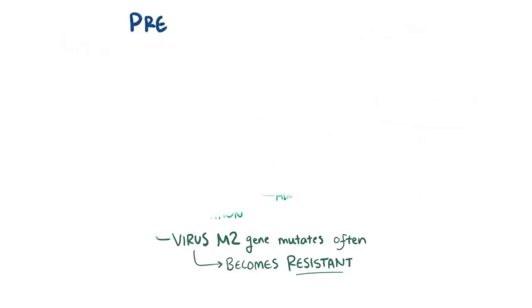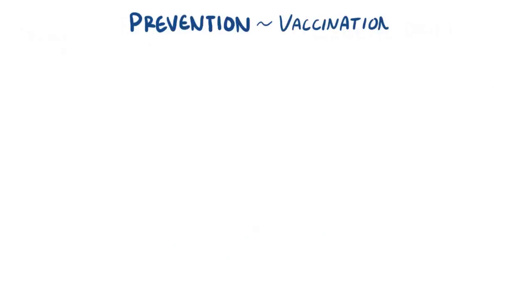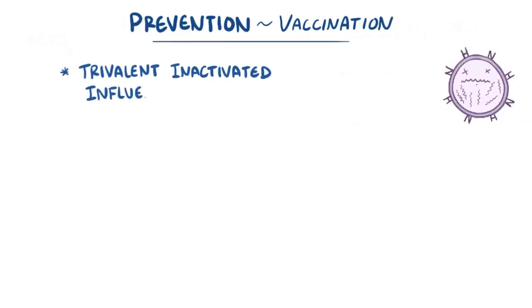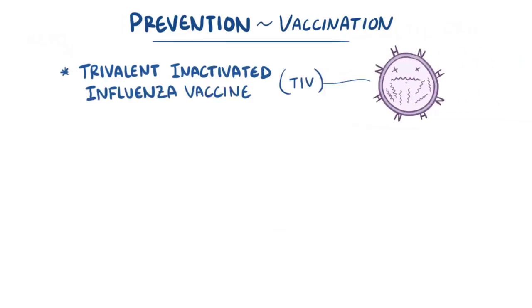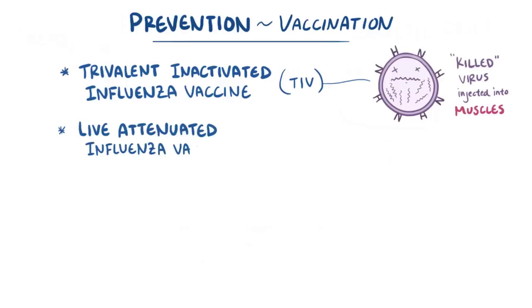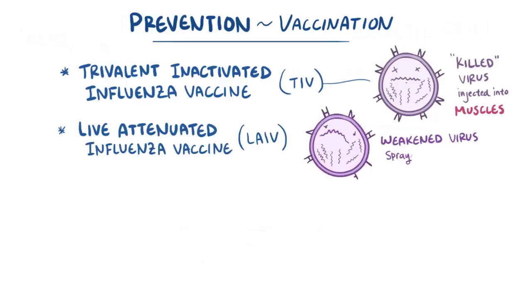The most effective way to prevent influenza is through vaccination, and there are two that are commonly offered. One option is a trivalent inactivated influenza vaccine, or TIV, which is a killed virus that's injected into a muscle. And the other is a live attenuated influenza vaccine, or LAIV, which is a weakened virus that's sprayed into the nose, so it can infect the epithelial cells.